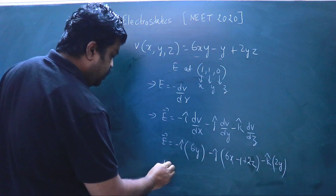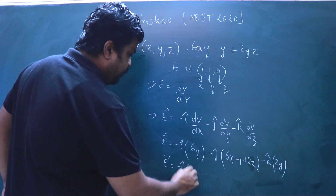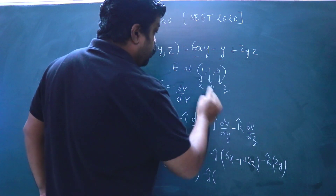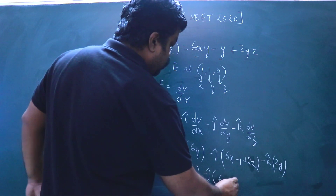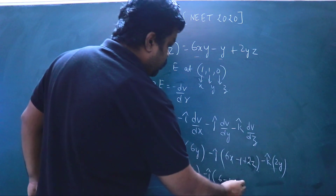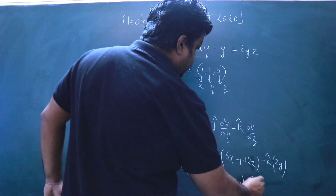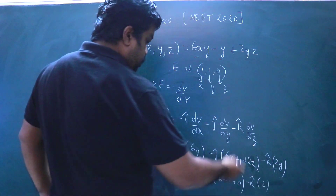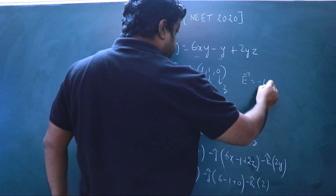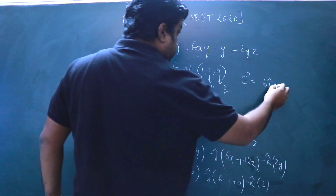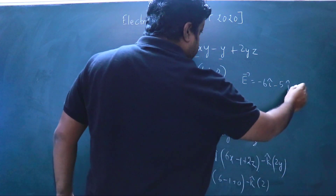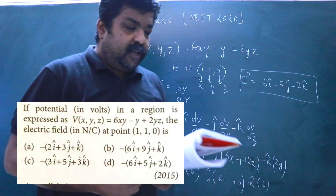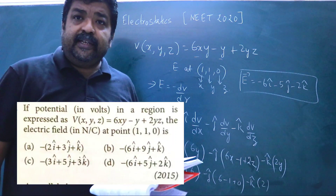Substituting (1, 1, 0): E = −î(6×1) − ĵ(6×1 − 1 + 2×0) − k̂(2×1) = −6î − 5ĵ − 2k̂. So the electric field at (1, 1, 0) is −6î − 5ĵ − 2k̂ Newton per Coulomb. From the given options, option D is the correct answer.